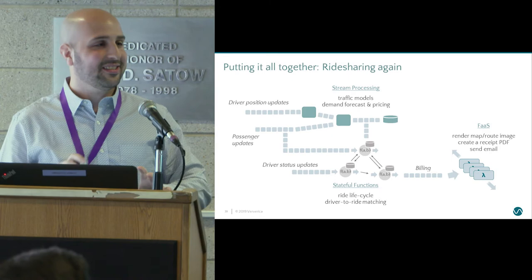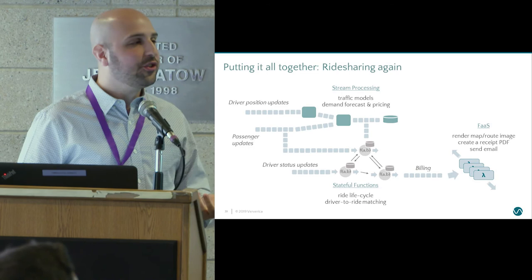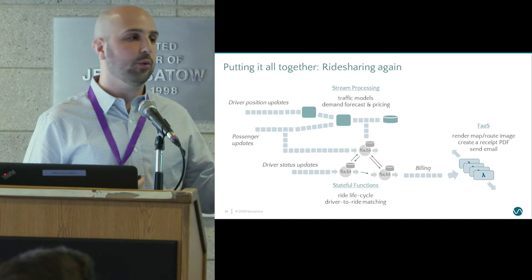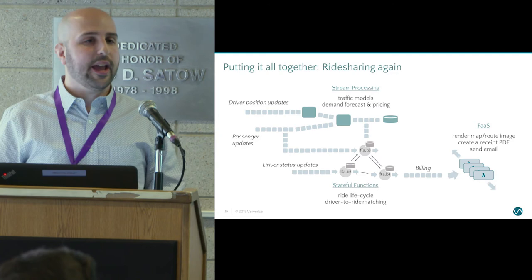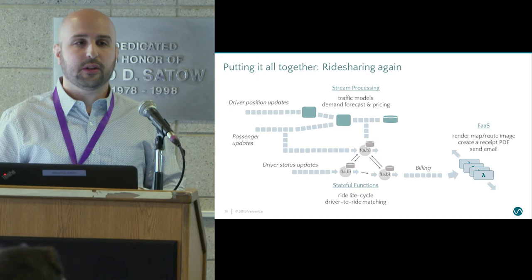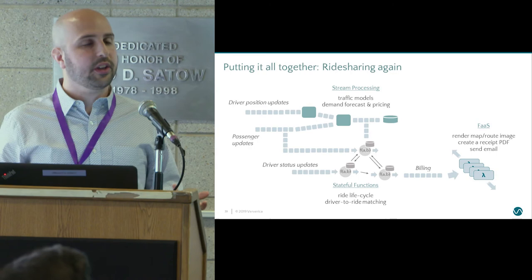Looking at our ride-sharing application, we have these different data streams coming in. We might do some forecasting and modeling using the DataStream API — and in fact this is how Lyft does all of their real-time pricing and weather forecasting, on top of Flink DataStream. But then I need to actually run my app: set up rides and connect riders and drivers, and for that we'll have a Stateful Functions application. Finally, I need to print receipts — take some metadata and render it as a PDF — and that's still a really good use case for traditional function as a service.